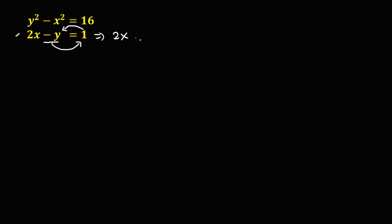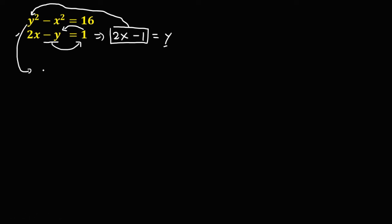This equation becomes 2x, then the positive 1 becomes negative 1, so y equals 2x minus 1. We now substitute this expression for y into the other equation, so y becomes 2x minus 1, quantity squared.